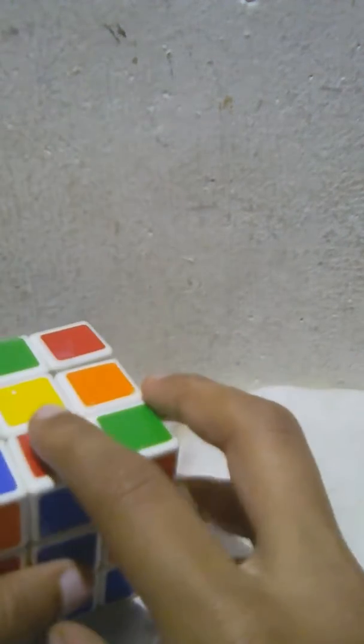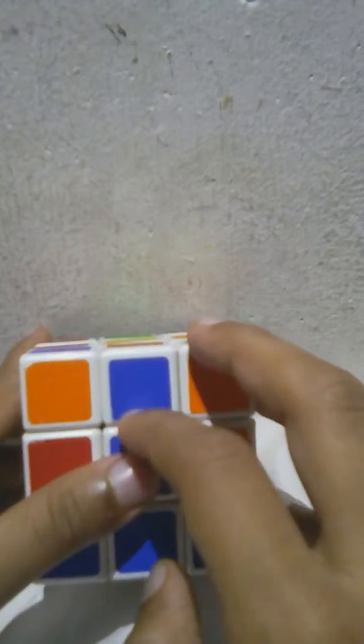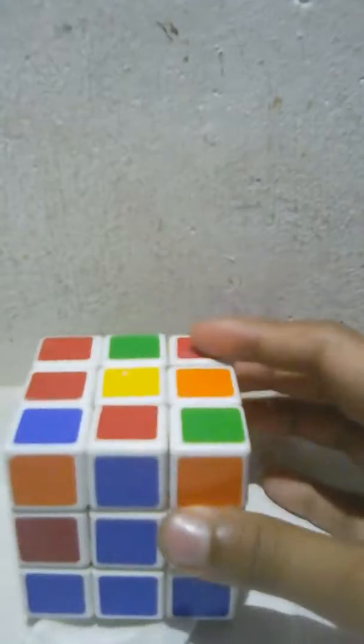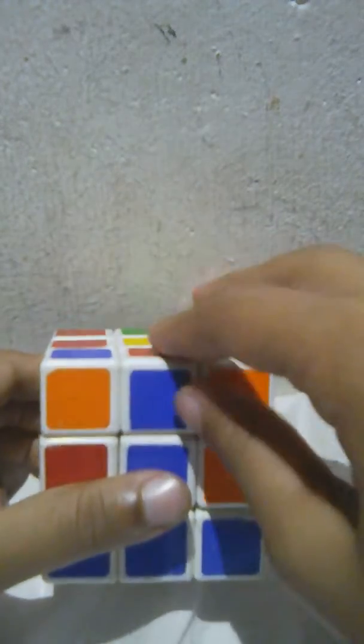Then, we have to check which color is below. That is blue. And then, what we have to do is take the blue and match it with the blue center. It's already matched. So, no problem.